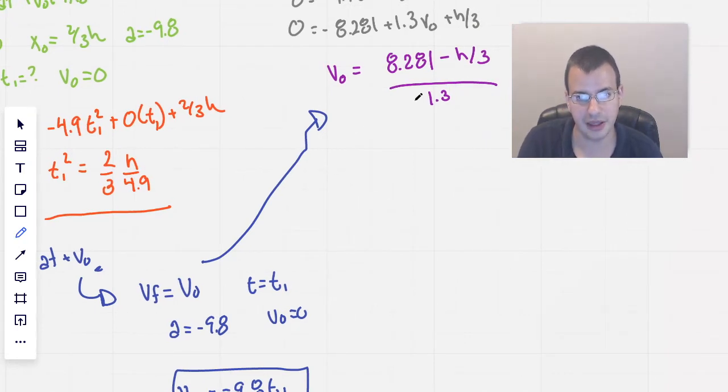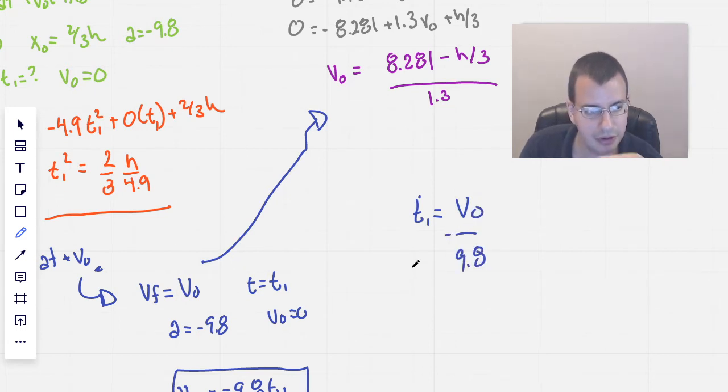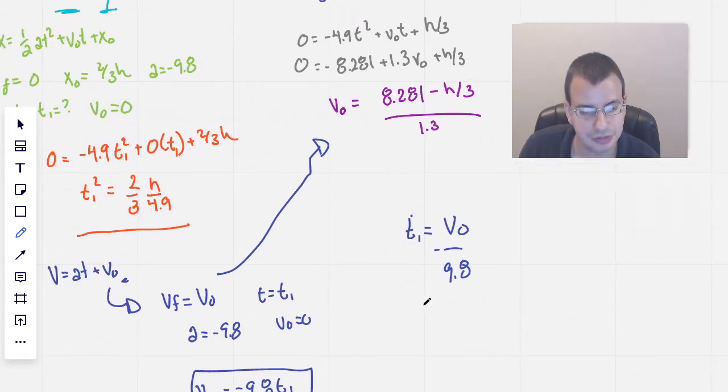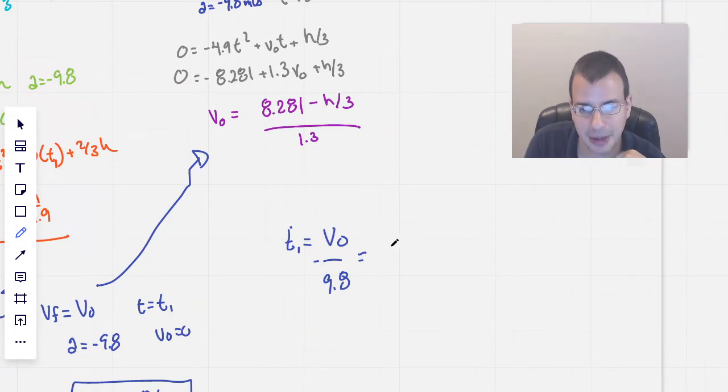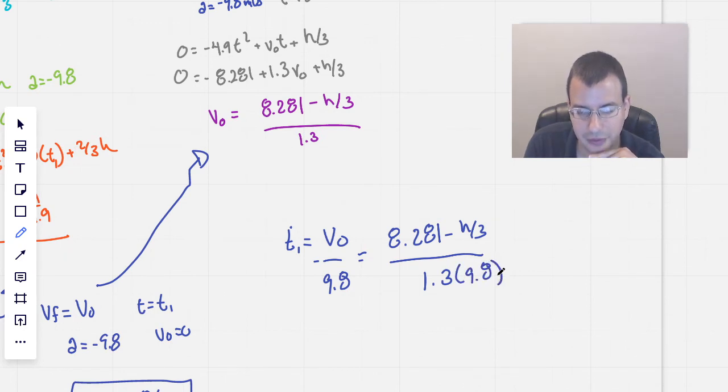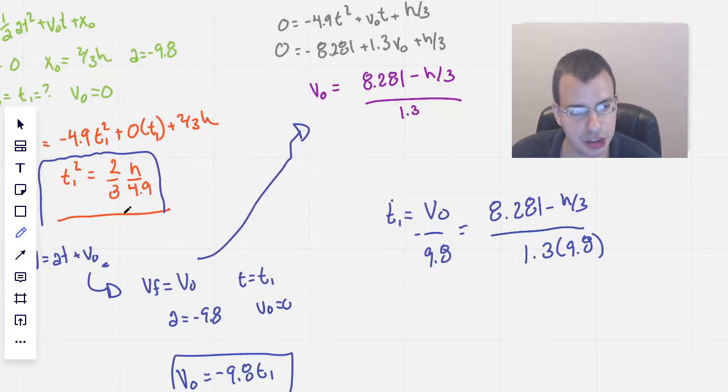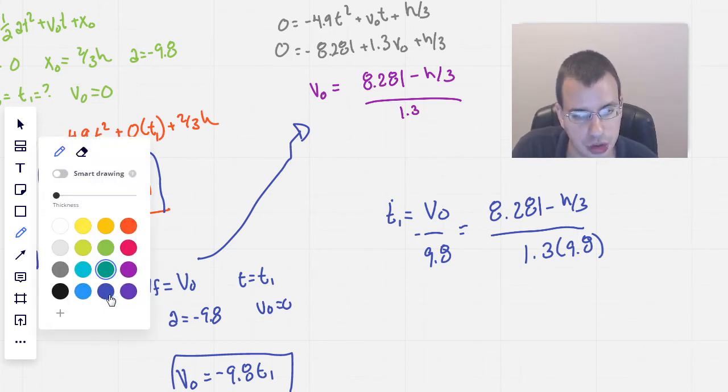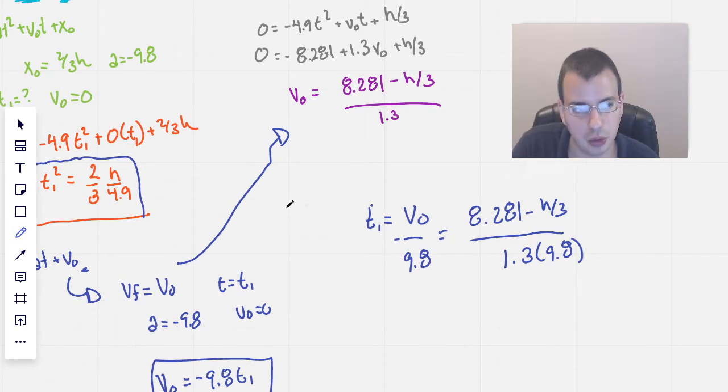This part is going to be useful because it relates to these two equations we have here. We're going to plug that in for that. So, T1 equals V naught over 9.8 negative. Which, by using this top equation up here, we have 8.281 minus H over 3 all over 1.3. And then, we divide the whole thing by 9.8 as well. Now that we have T1 here, using these two equations, we can plug it into this equation over here using substitution. Basically, two equations, two unknowns, which means that we should be able to solve this. Our two unknowns is T1 and H.